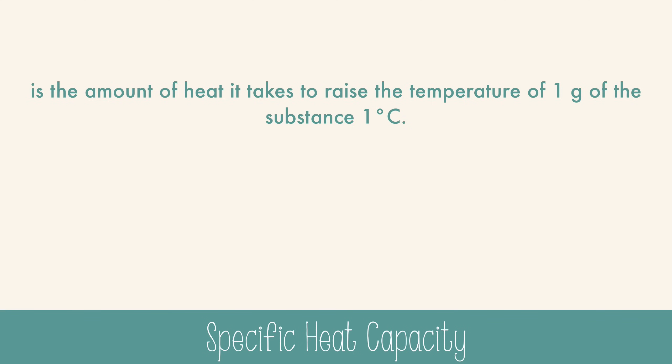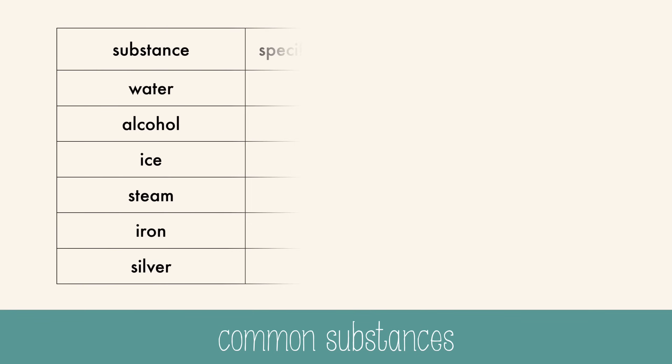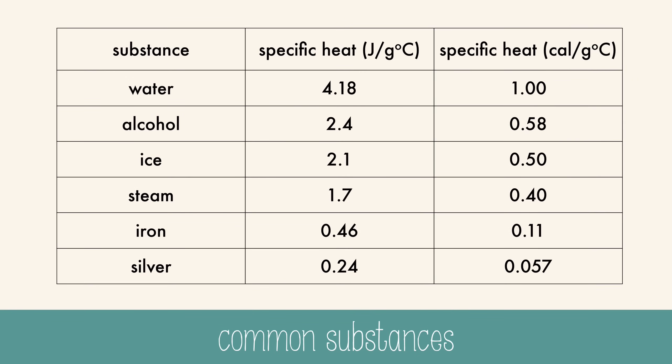Specific heat capacity is the amount of heat it takes to raise the temperature of one gram of the substance one degree Celsius. It is written as the letter C, and it has units of joules per gram degrees Celsius. Here are some common substances and their specific heat capacities. Water has a very high capacity compared to metals like iron, meaning it requires more heat to raise the temperature of water than iron.